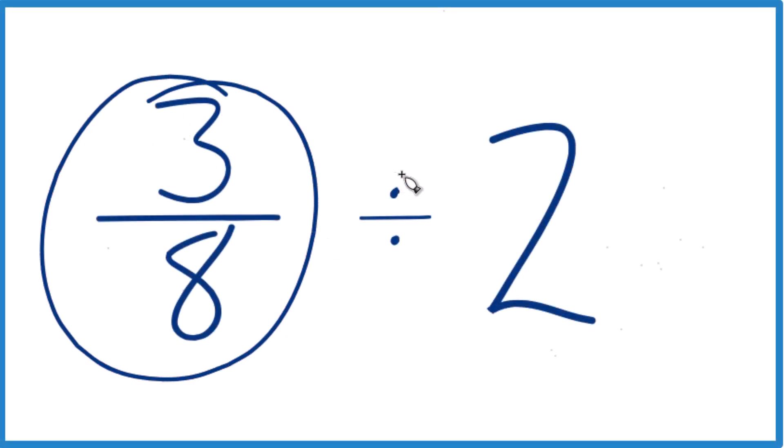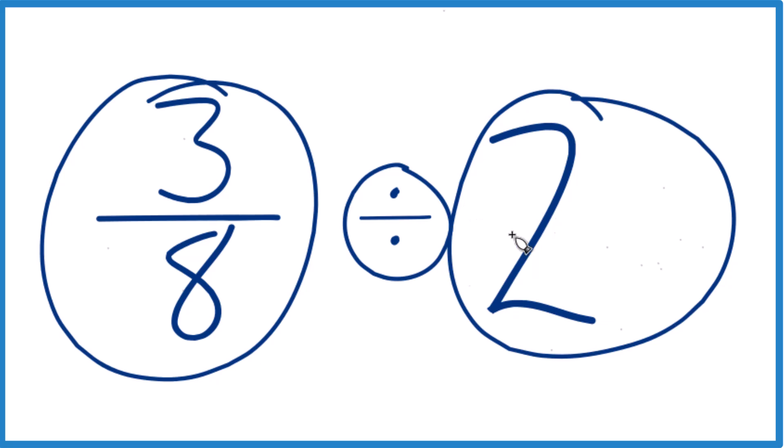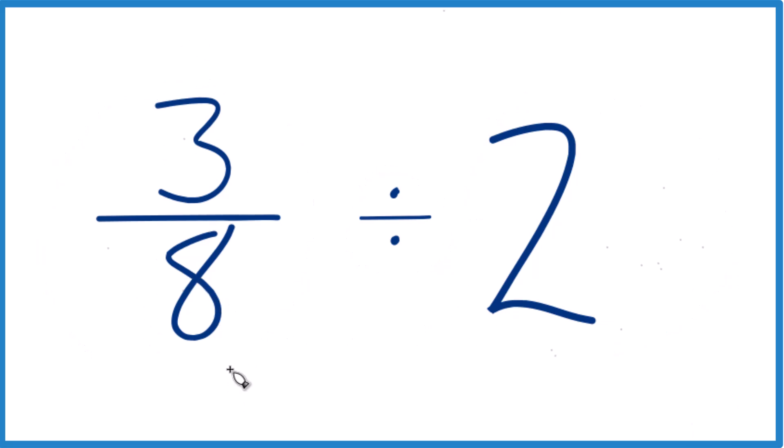Let's take three-eighths and divide that by two. So three-eighths divided by two. First off, three-eighths—that's less than one, that's a smaller number than one. And we're trying to see how many times two goes into this number less than one, so we should get a pretty small number.